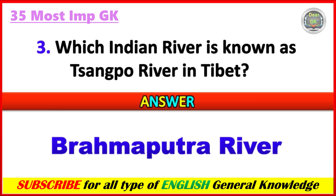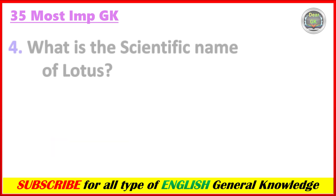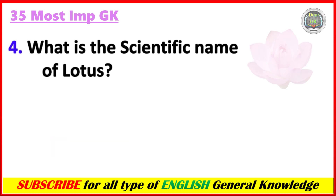Which Indian river is known as Zangpo River in Tibet? Answer: Brahmaputra River.